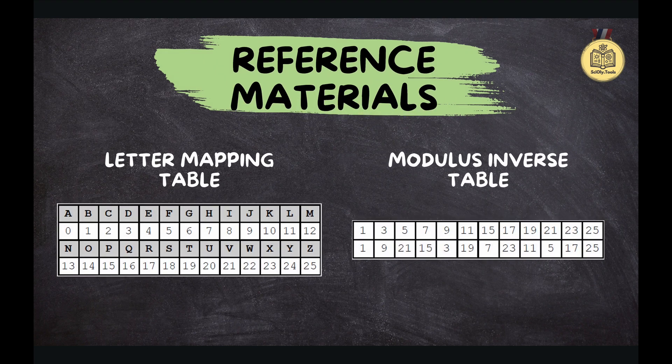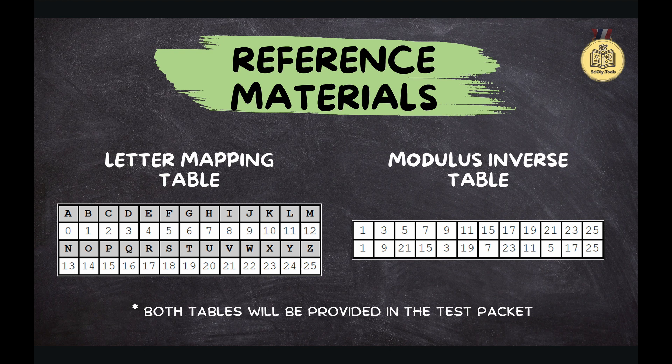There are two super helpful tables that make this way easier. One matches letters to numbers, like A is 0, B is 1, you get the idea. The other table helps you find what's called A inverse. It's like having a cheat sheet for reversing the inverse. Instead of doing complex calculations, you just use the tables to find the values you need. Boom. Problem solved.